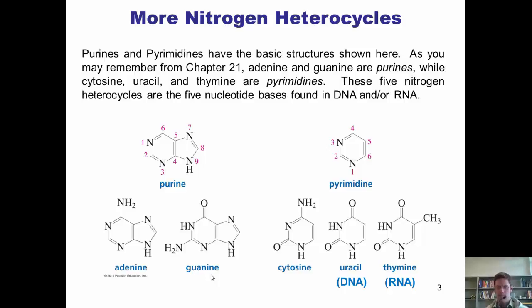Now the pyrimidines, cytosine uracil and thymine, begin with the letters C-U-T, which spells the word cut. While an ag, or Aggie, is pure, an infected cut, cytosine, uracil, and thymine is not. Hence, the cut heterocycles are the pyrimidines.